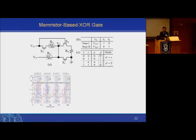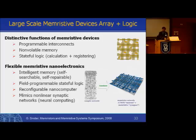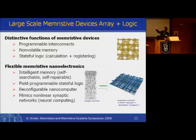Sangho Shin, from my group, made a memristor-based exclusive-OR gate — that shows two memristors and some switching transitions. But last night, Shaha showed me his proposal on making a different kind of logic gates under certain boundary conditions. So that's a really exciting development here, even at Technion. You can have a large-scale memristive device array plus logic function, programmable interconnects, non-volatile memory, and embedded stateful logic.